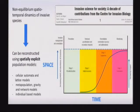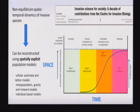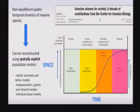Today I will talk about spatially explicit population models. These tools allow us to track the movement of invasive populations across space using GPS coordinates, giving us an idea of where species can be and spread over time. These models can be classified into three big groups, based mainly on a book published recently by Dave Richardson and Kangui — which I encourage you to read. We have: cellular automata and lattice models; metapopulation, gravity, and network models; and individual-based or agent-based models.